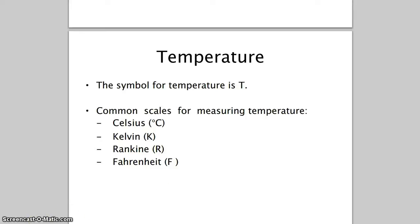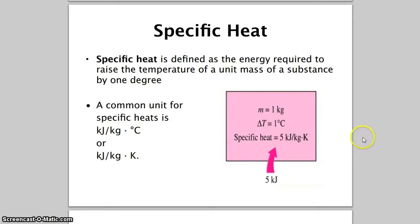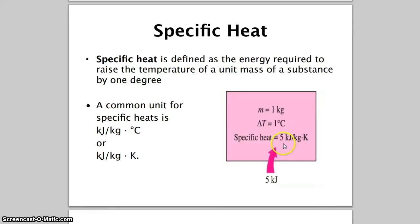Now let's look at specific heat. Specific heat is defined as the energy required to raise the temperature of a unit mass of a substance by one degree. The common unit is kilojoule per kilogram per Celsius. For example, if a specific heat is 5 kJ/kg·°C, then 5 kilojoules of energy is required to increase one kilogram of that substance by one degree.